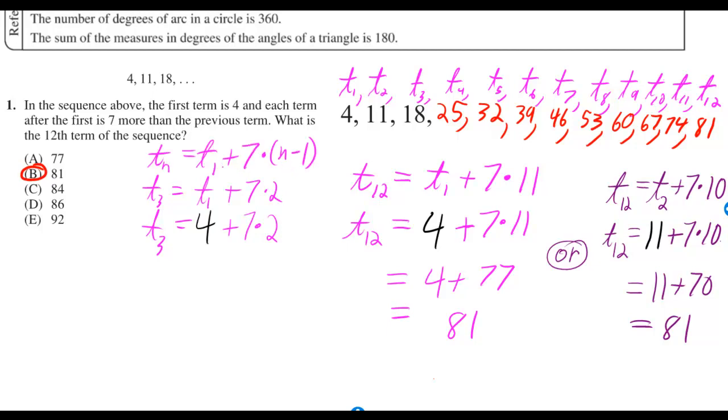To get from the first term to the nth term, you have to add n minus 1 sevens. And that formula works to get you to the third term, you add 2 sevens. To get to the 12th term, you add 11 sevens.